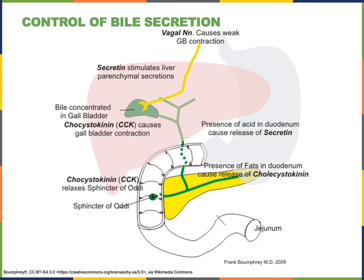The secretion of bile is regulated through nervous as well as endocrine mechanisms. Bile acids and bile salts are continuously being produced by hepatocytes in the liver, and this bile drains through the hepatic ducts. But bile will not enter into the duodenum as long as the sphincter of Oddi remains closed. Bile will back up into the gallbladder, where it can then be stored and become concentrated.